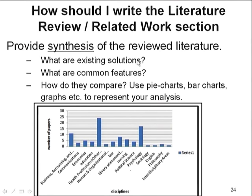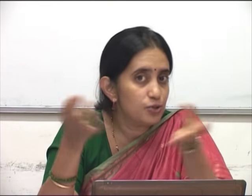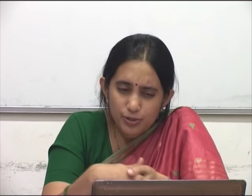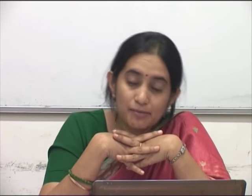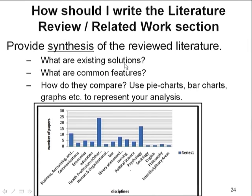How does one do synthesis? Try to look for anything that is common or something that is different — analyzing and synthesizing on the basis of commonalities and differences is a very often-used technique. You can use representations from engineering: charts, graphs, and tables to represent the analysis. Once you have these graphs, you can write your literature review section in terms of maybe three paragraphs — one on what are existing solutions for your problem on related work, what are the common things and how they compare. Each of these questions can become one paragraph in the literature review section.